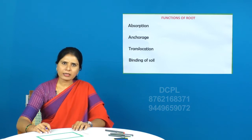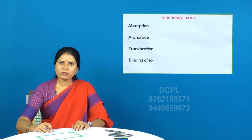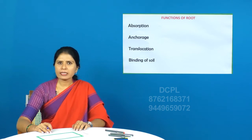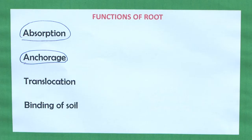What do you mean by anchorage? The root fixes the plant body firmly to the soil surface and it helps in the anchorage of the aerial parts of the plant body.